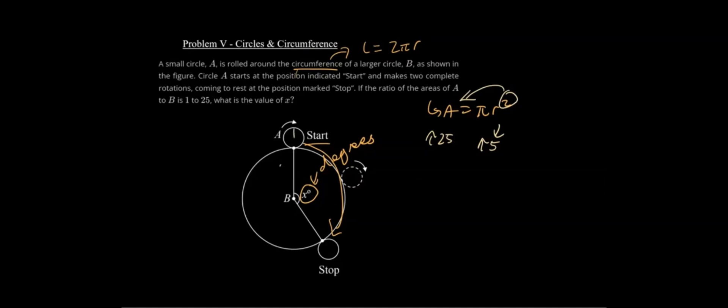We can see this here. Let's say we call A's radius 1 and B's radius 5. We would have A is equal to π times 1 squared, which is equal to π. And then we would have B is equal to π times 5 squared, which is equal to 25π. This is clearly a ratio of 1 to 25.